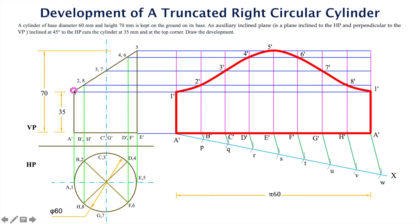Finally, if we cut along this and unfold it, we will get this type of surface. Or vice versa, if we have to get this type of cylinder, then we have to cut the sheet like this profile. And after folding this one, we will get this type of tapered cylinder.